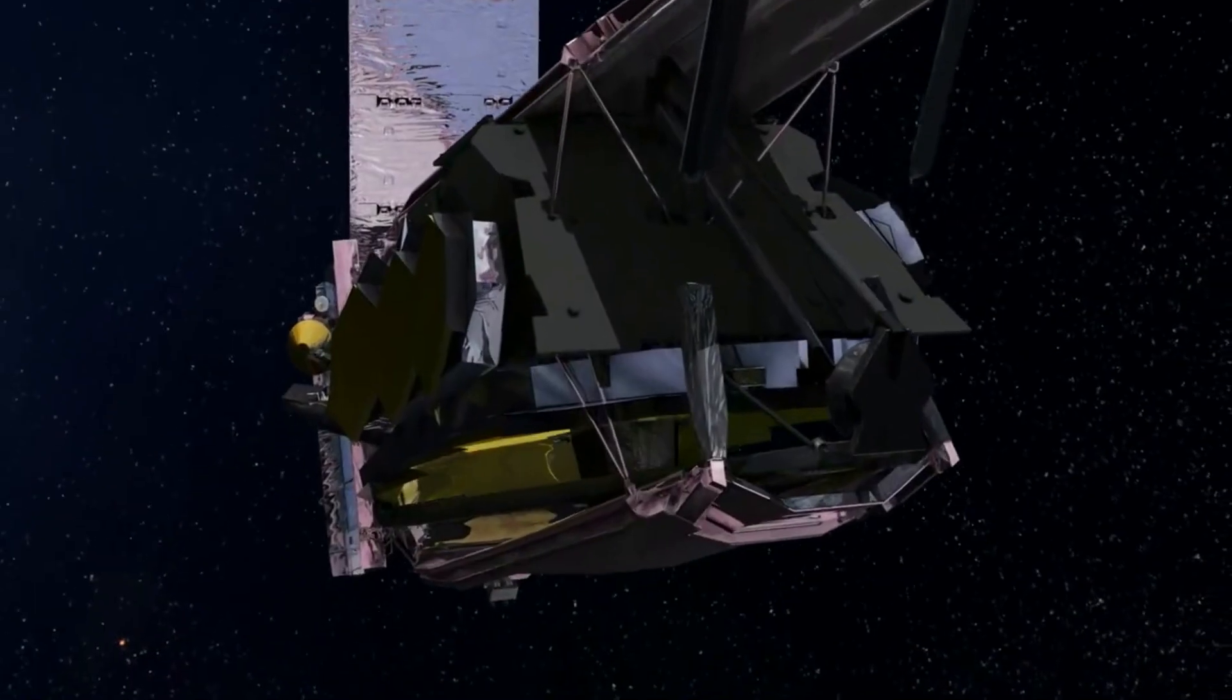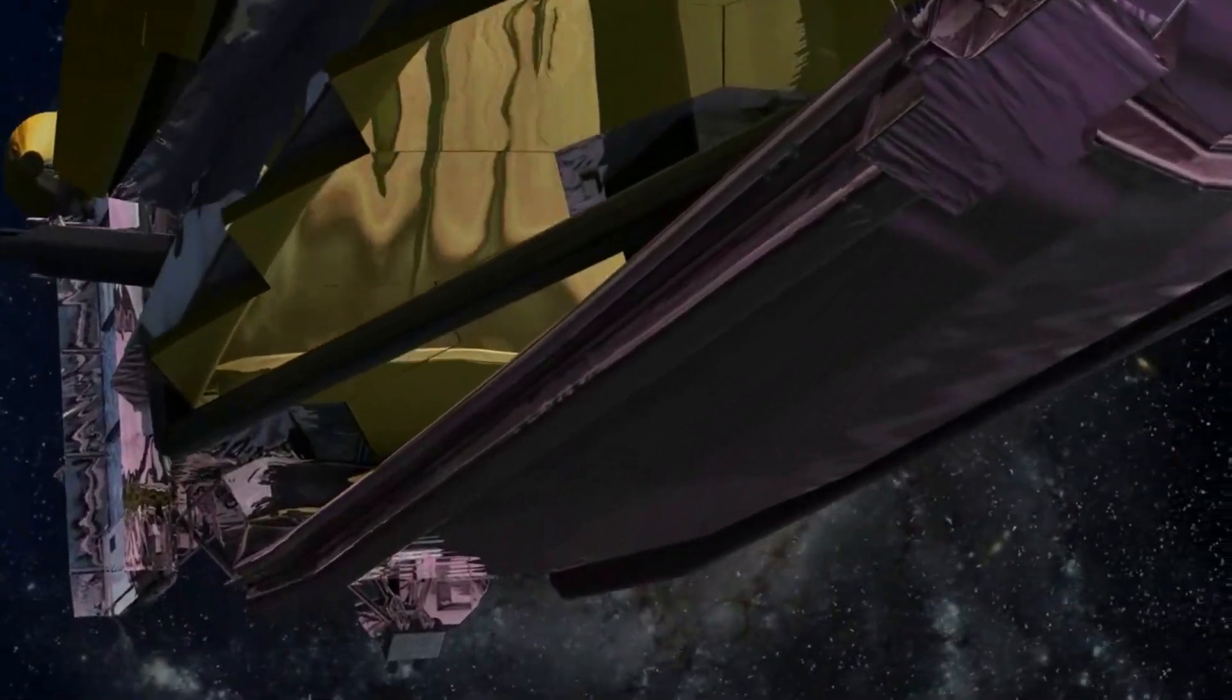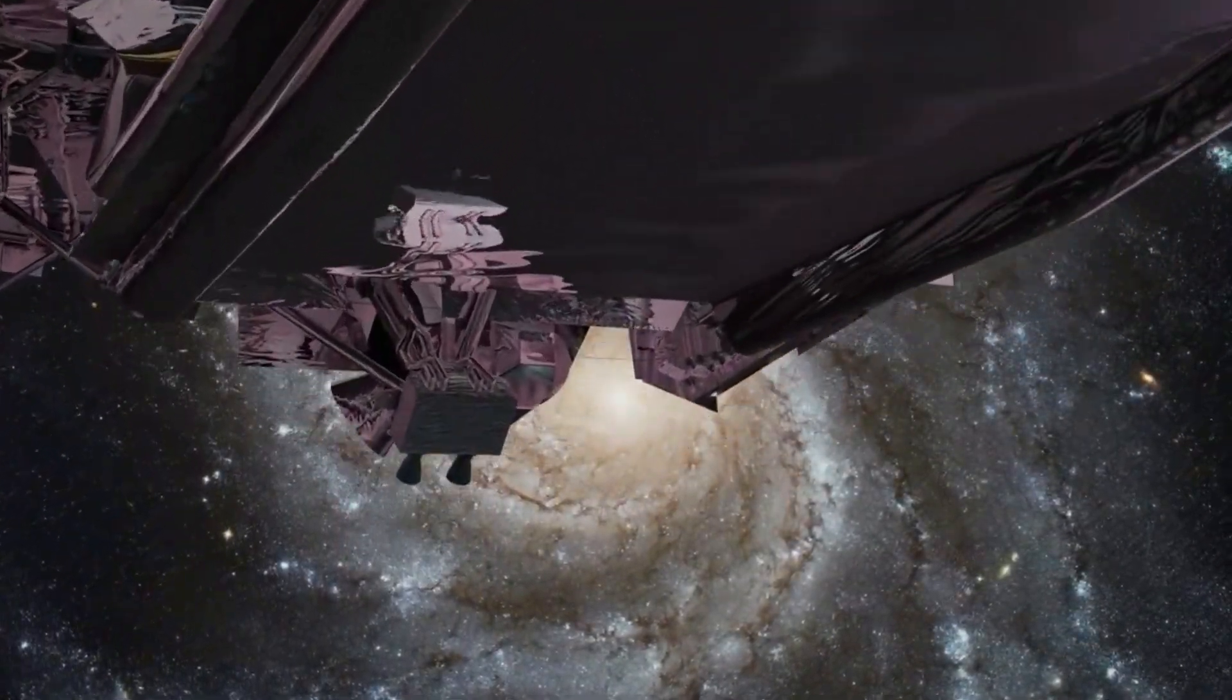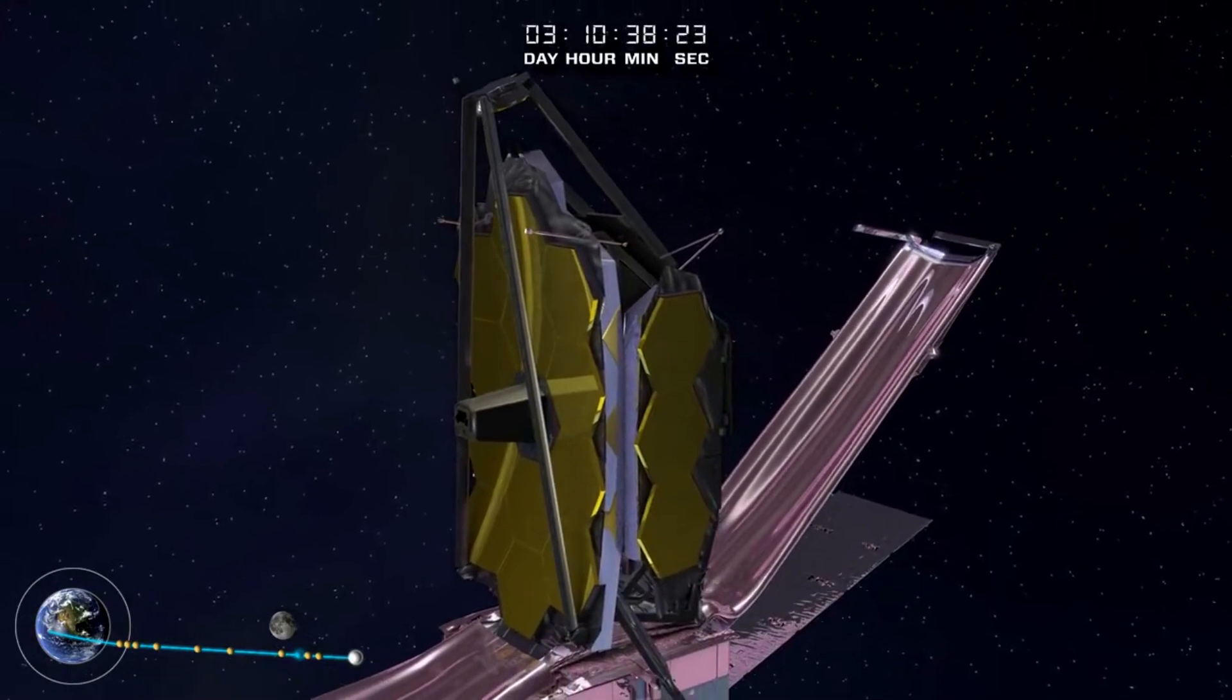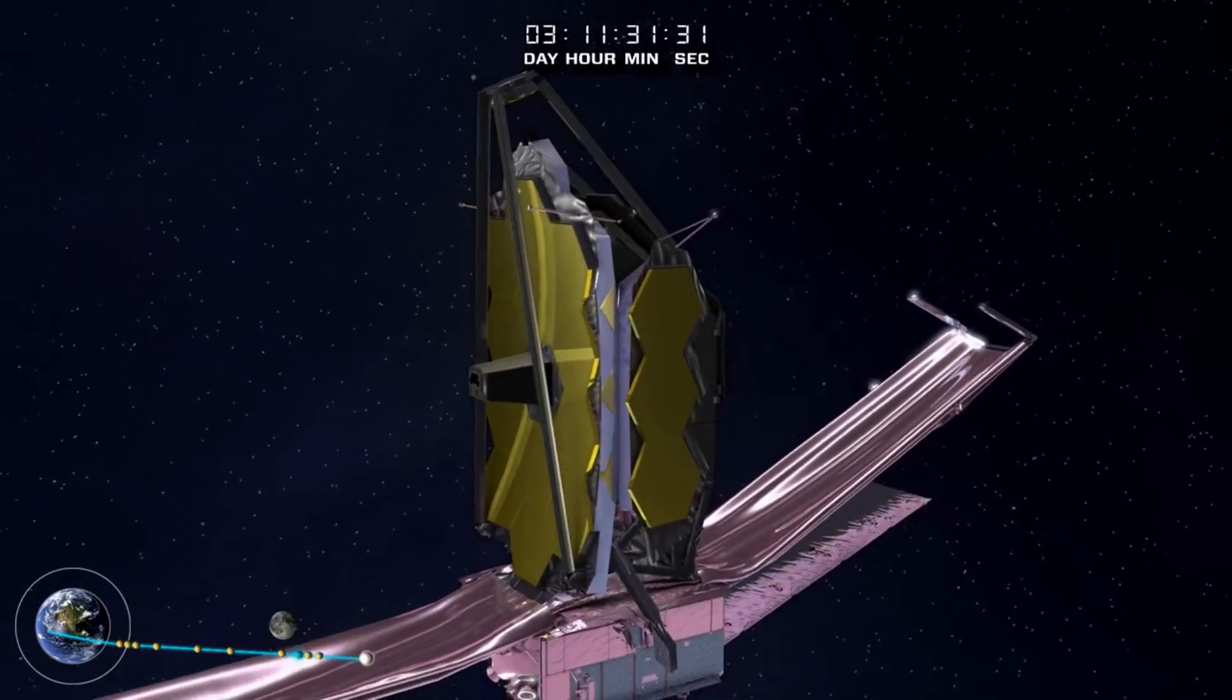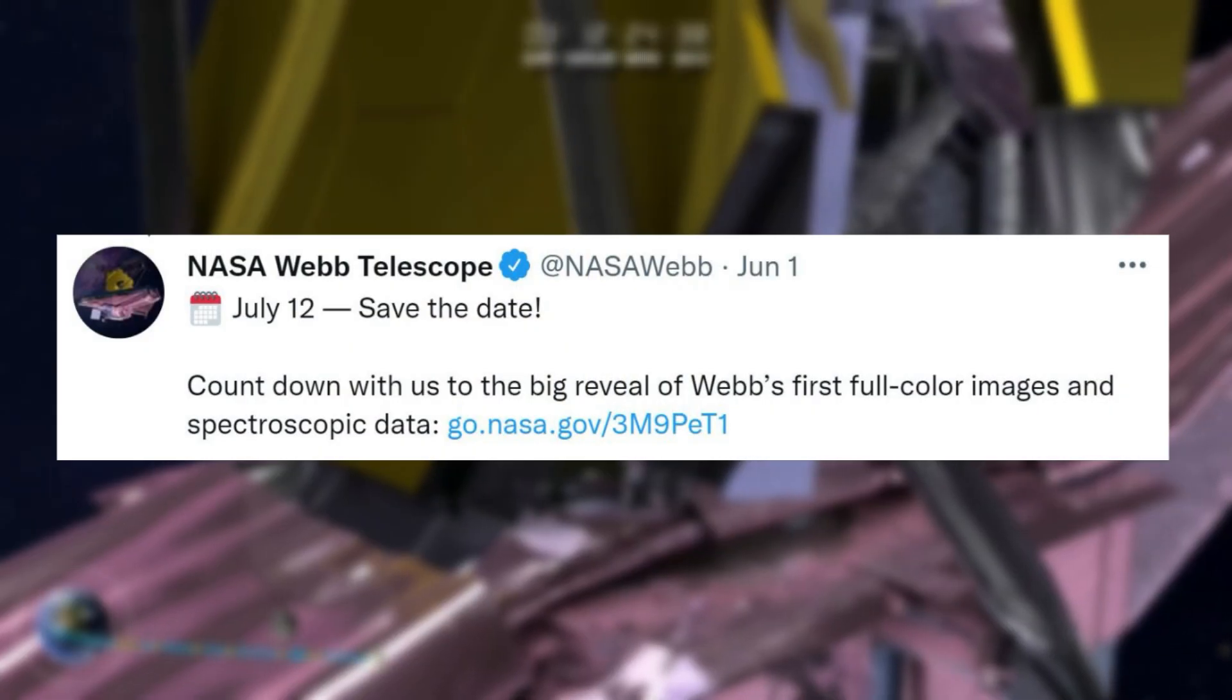With the JWST making so much progress over the past few months, it was only a matter of time before some of the first full-color images were released. Just a few days ago on the 1st of June, NASA tweeted saying, July 12th, save the date.